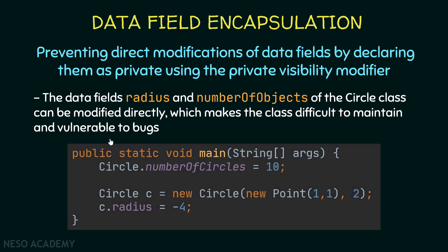The data fields radius and number of objects of the circle class can be modified directly, which makes the class difficult to maintain and vulnerable to bugs. In the main method, I can access the number of circles attribute and assign it to be equal to 10, for example, which leads to incorrect information. This variable is supposed to keep track of the number of objects — we only want to change it when we create a new object.